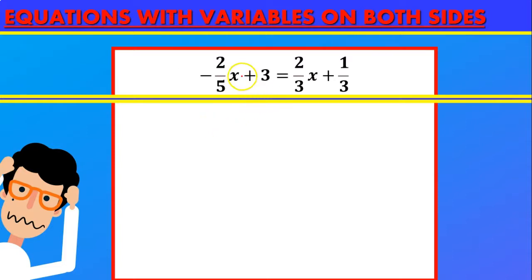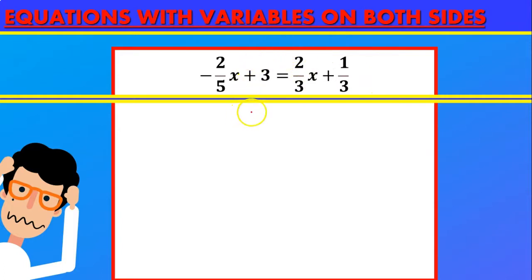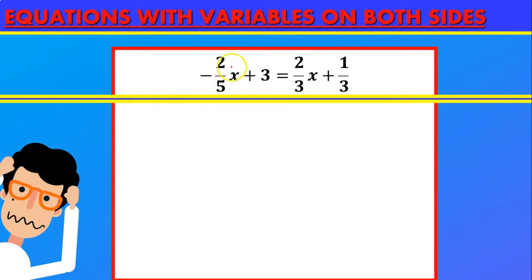Now the next problem. We have something with x and a coefficient on the left side, and on the right side we also have something with x and a coefficient. So let's try moving everything that has a variable to the right side, and everything that has a number or coefficient to the left side. So this minus 2 we're going to move to the right side of the equal sign, so plus 2.